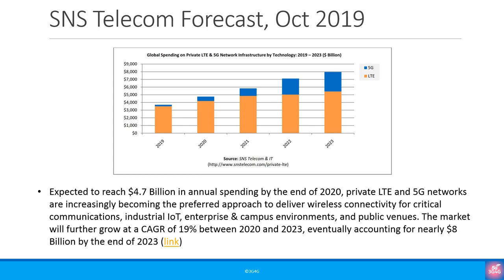The question you may have is why there has been emphasis on private networks recently. A forecast from October last year by SNS Telecom says that the market is expected to reach $4.7 billion in annual spending by the end of 2020, becoming the preferred approach to deliver wireless connectivity for critical communications, industrial IoT, enterprise and campus networks, and public venues. The market will grow at a compound annual growth rate of 19% between 2020 and 2023, eventually accounting for nearly $8 billion by the end of 2023.